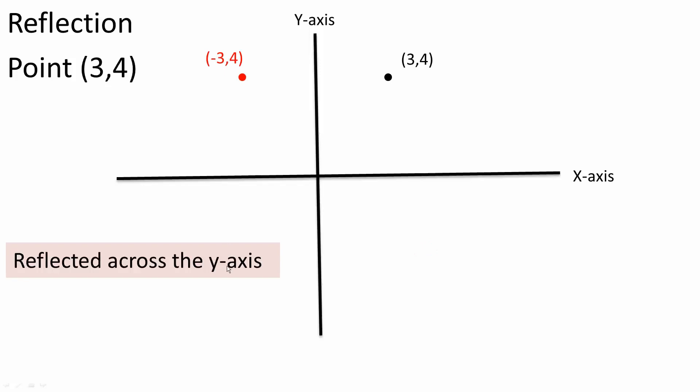Next, we'll do the y-axis. This is the y-axis, and we want to reflect across the y-axis. So (3,4), this value becomes negative 3, so it's going to reflect across the y-axis.